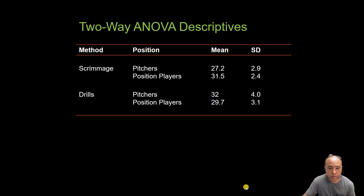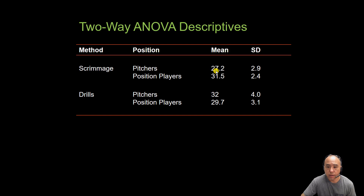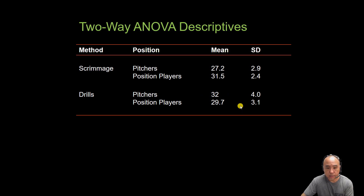These are the summary statistics calculated in RStudio, collapsed by position for pitchers and position players, showing the mean and standard deviation of fielding coverages for each instructional method. You can see that pitchers have lower fielding coverage compared to position players in the scrimmage condition, whereas in the drills condition, pitchers actually perform better in terms of fielding coverage.